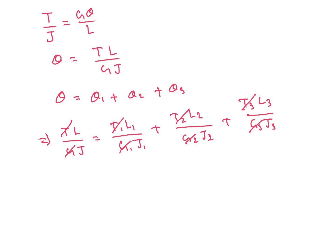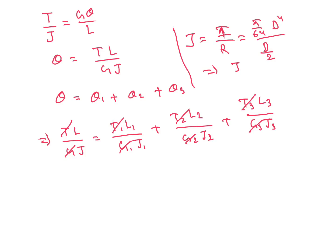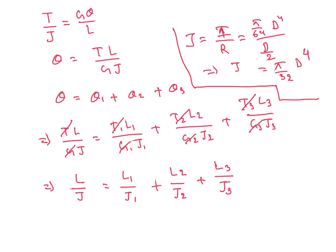J is our polar moment of inertia. J equals I by R, where I is moment of inertia equal to pi by 64 into D to the power 4, divided by R which is D by 2. So from here we will get J equal to pi by 32 into D to the power 4. From here we will get L by J equal to L1 by J1 plus L2 by J2 plus L3 by J3.